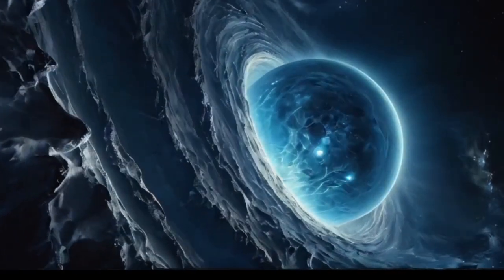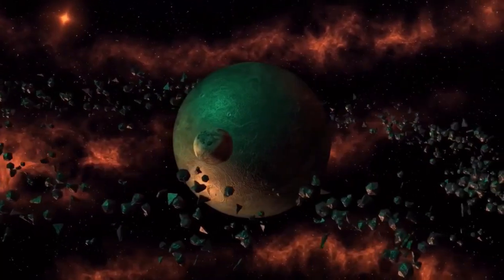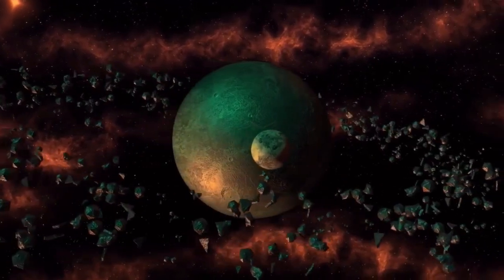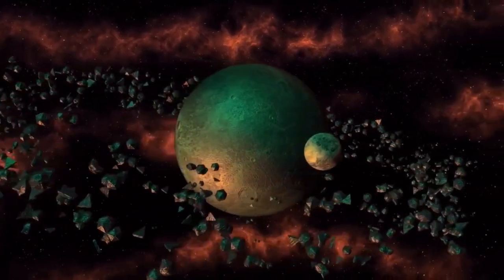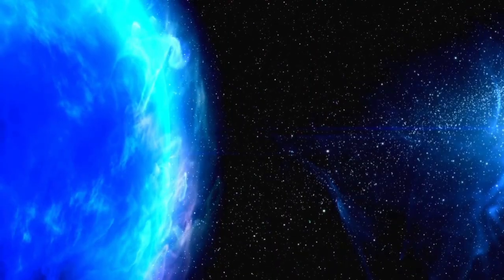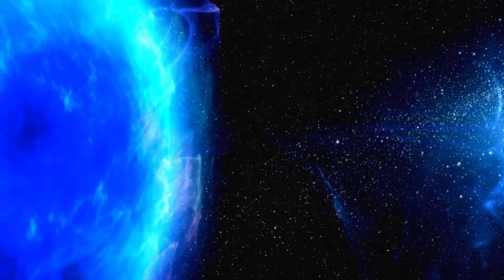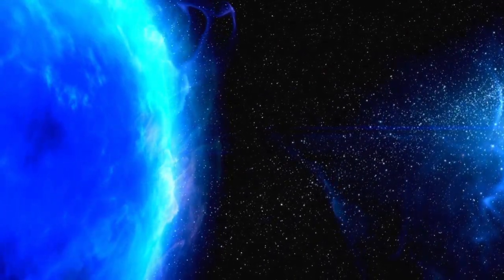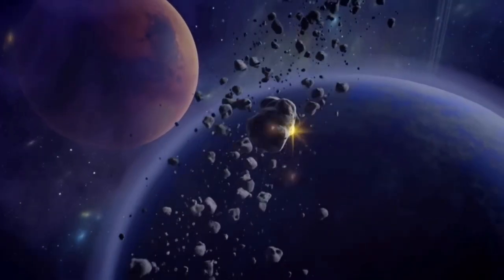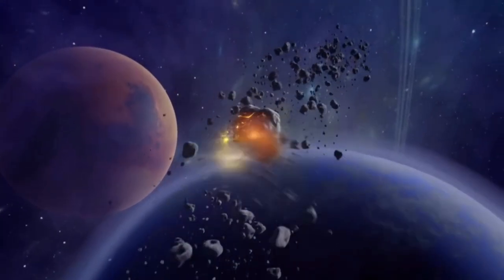The idea of planets being ejected from their home systems is not merely theoretical. Astronomers have already detected rogue planets, worlds that drift alone in the darkness of interstellar space, having been thrown out of their original planetary systems by gravitational instabilities. Could Pluto, or another distant object, someday suffer the same fate?